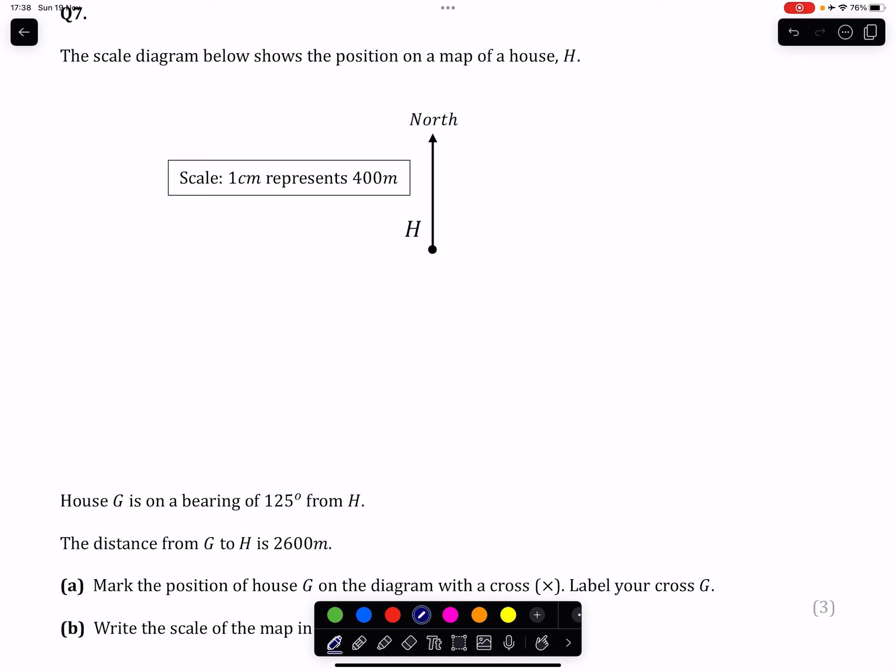Question 7. The scale diagram shows the position on a map of a house H. We're being told that the scale represented here is 1cm on the picture is 400m in the real world. And we're being told that house G is on a bearing of 125 degrees from H, and the distance from house H to house G is 2600m. Mark the position of house G on the diagram with a cross.